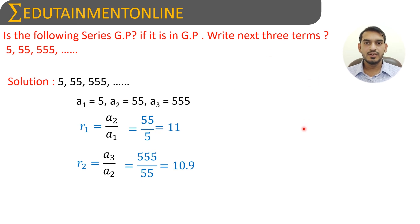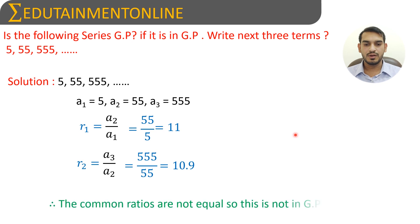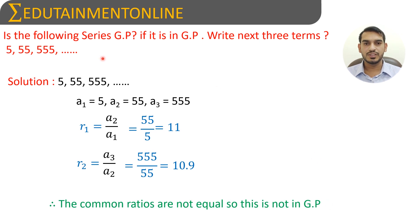Since this series is not in geometric progression, we cannot find the next three terms using the geometric progression method or formula. Therefore, since the common ratio is not equal, the series is not in geometric progression.